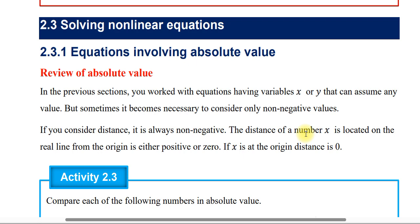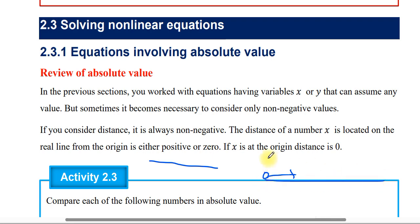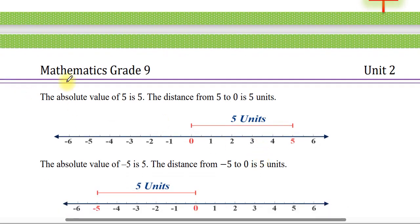If x is negative, the distance is positive. If x is at the origin, the distance is zero. The real line is just the number line. If x is positive, you will see the number x is positive or negative. Absolute value of five is five. The distance from five to zero is five units.